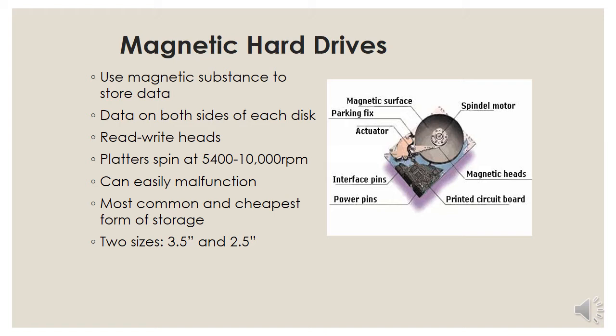If you've ever looked at a hard drive, you can't see inside — it's totally sealed so that no dust or air can get in and disturb the heads. The platters spin very fast at 5,400 to 10,000 rotations per minute, and the hard drive can easily malfunction. The magnetic hard drive is your most common and cheapest form of storage, being a relatively older technology. There are two sizes: 3.5 inch, which goes into a desktop, and 2.5 inch, which goes into a laptop.